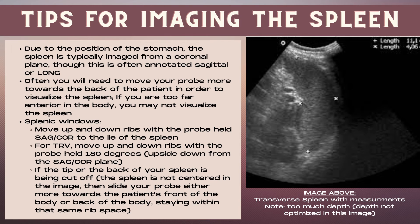Now let's talk about splenic windows. To image the spleen, the probe is rotated slightly at an angle, and to get different windows we move up and down rib spaces with the probe held sagittal or coronal to the lie of the spleen. For a transverse plane, also move up and down rib spaces with the probe held 180 degrees from the sagittal coronal plane. If the anterior tip or back of the spleen is cut off, slide the probe either more towards the front or back of the body — staying in the same rib space with a gentle sliding motion to center the spleen.